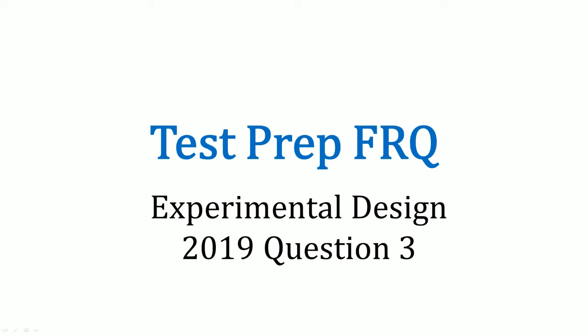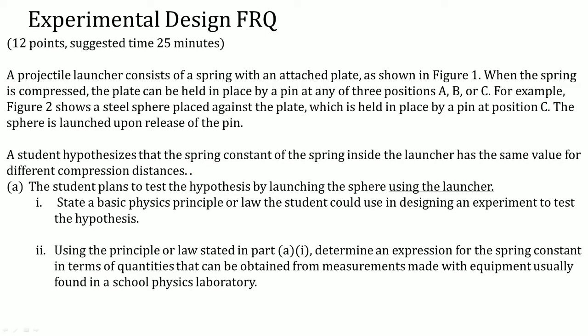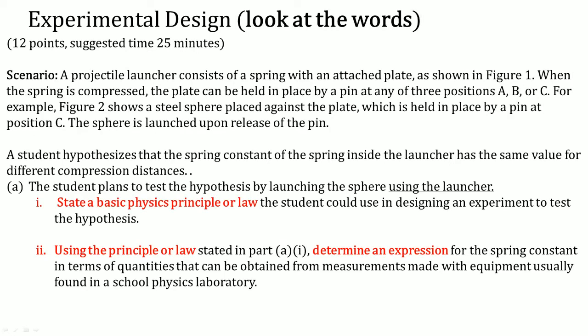Welcome. In this video I will be going over an experimental design question that appears on the AP Physics 1 exam on the FRQ section. This particular question comes from 2019, which is question 3. The experimental design question is always worth 12 points and the suggested time is 25 minutes. Here you can read the scenario to yourself.